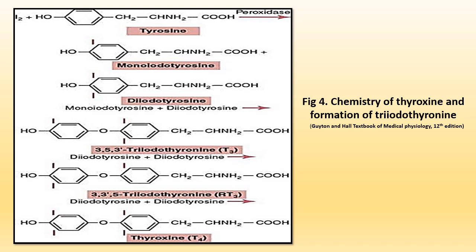Here in this slide, you can see the chemistry of thyroxine and formation of triiodothyronine. When iodine joins tyrosine at the carbon-3 position, monoiodothyrosine is produced, whereas a second iodine that joins at the carbon-5 position of the same tyrosine residue forms diiodothyrosine. When MIT and DIT couple, it forms triiodothyronine. When DIT couples with MIT, it forms reverse triiodothyronine. When DIT couples with DIT, it forms thyroxine or tetraiodothyronine.